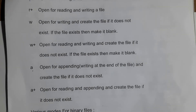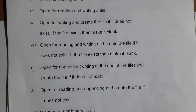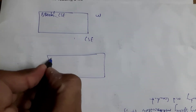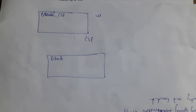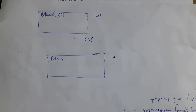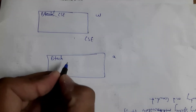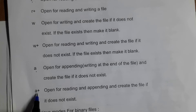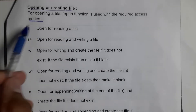Append mode means adding data at the end of the file. If there is already some data in the file and you want to add new data, use append mode. For example, if the file already contains some text and you want to add 'CSC' at the end, you use append mode. The last text mode is 'a+' mode, which allows you to both read and append data to a file.